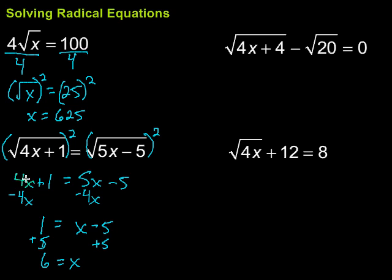Let's take that back, make sure it works. So we have 6 times 4, which is 24, plus 1 would be 25. Square root of 25 is 5. So we're good there. Then let's go over here, 5 times 6 is 30, minus 5 is 25. Square root of 25 is 5. So we're all set on that one as well. They both check out.